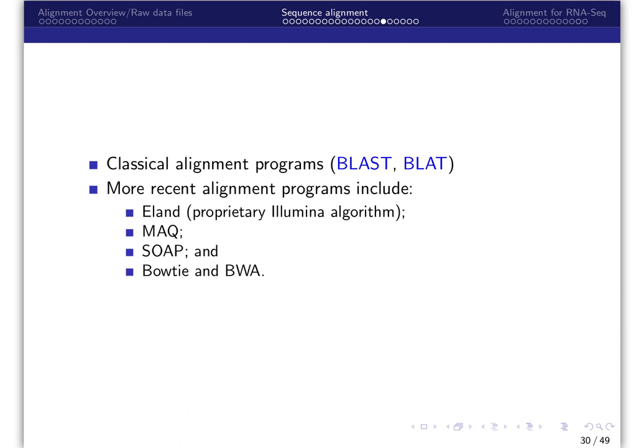More recently developed alignment programs include ELAND, which is the proprietary alignment tool from Illumina. Others include MAC, which uses an alignment algorithm similar to ELAND to find the best hit. SOAP, which uses seed and hash lookup tables for binary representation of query and reference genomes. Bowtie and BWA both use Burrows-Wheeler Transform to compress the query and reference genome and then MAP. All of these use an efficient error-tolerant indexing of the reference genome.